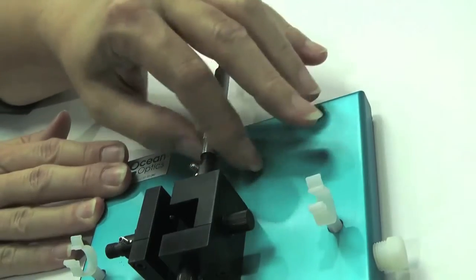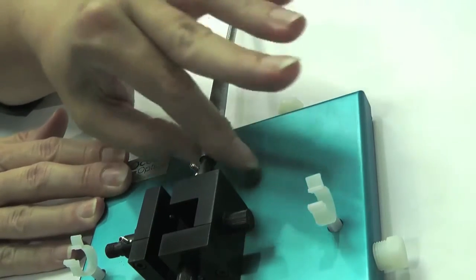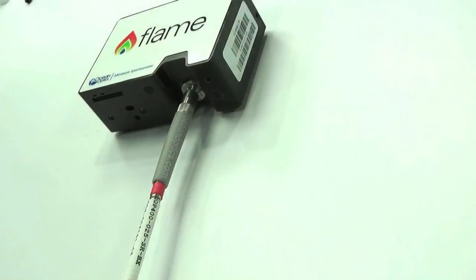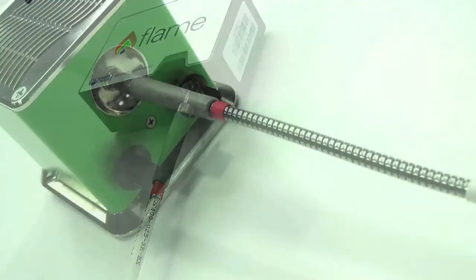Now attach the two fibers to the remaining SMA connectors at 90 degrees to each other. Connect the other end of one fiber to your spectrometer and of the other fiber to your light source.